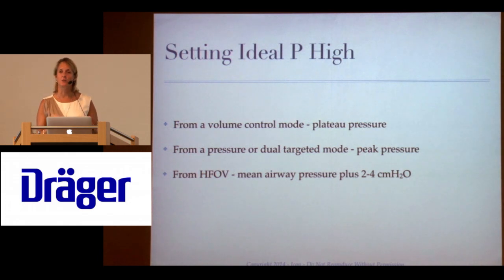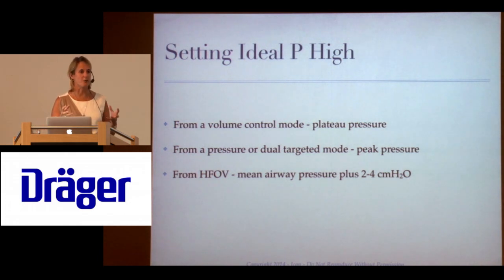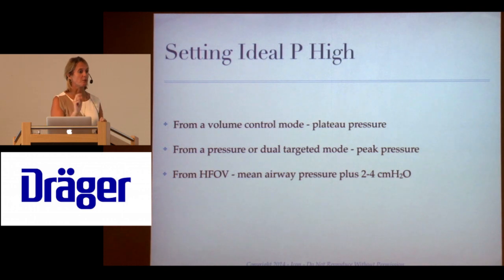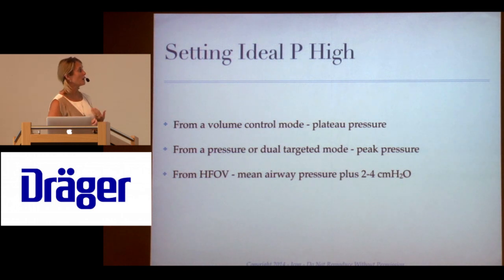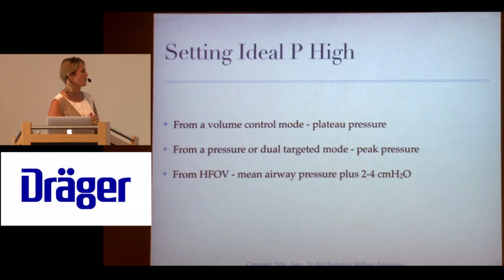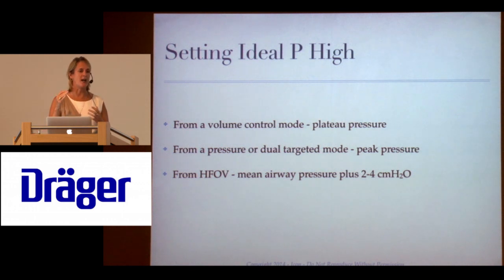How do we set the ideal P high? From a pure volume control mode with no autoflow or PRVC, you want to transition using your plateau pressure — do an inspiratory hold to get the plateau pressure; that would be your P high. If going from a pressure mode like BiPAP or a dual-targeted mode like PRVC or autoflow, use the peak pressure because it's very close to the plateau pressure. From HFOV, use the mean airway pressure and add 2 to 4 centimeters.